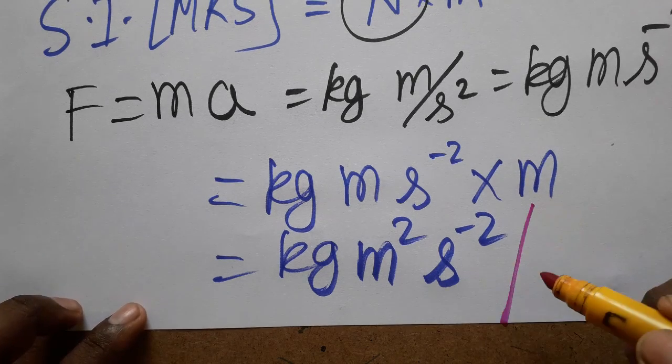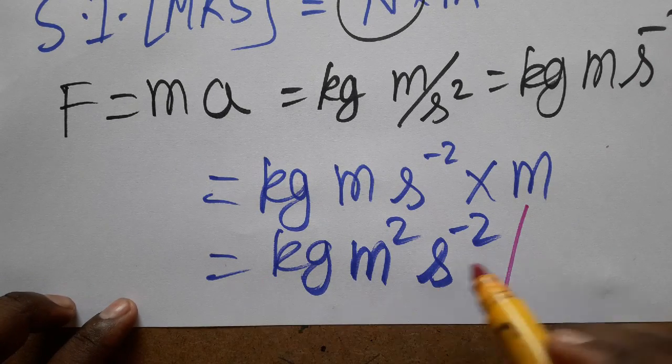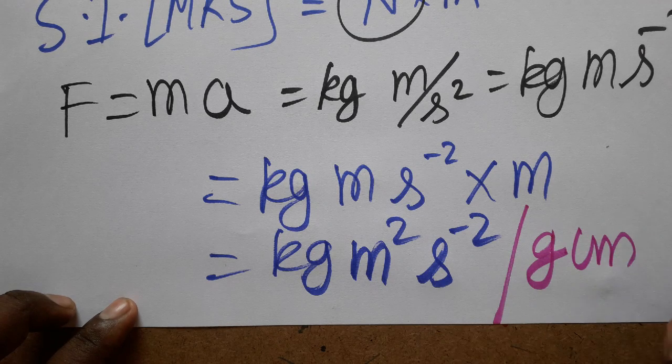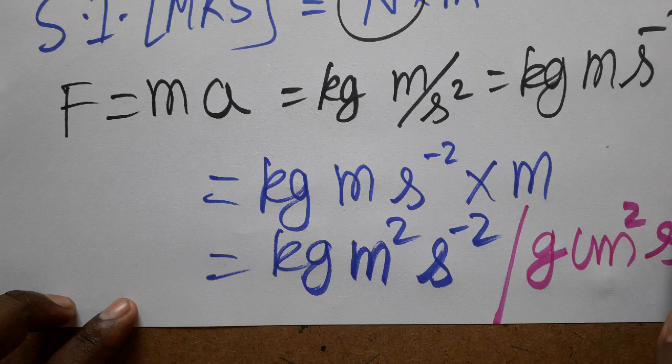The same unit in CGS system: centimeter, gram, second. So kilogram we can take as gram, meter we can take as centimeter, second is second only. So it's gram centimeter squared second minus two.